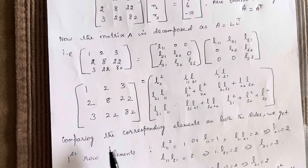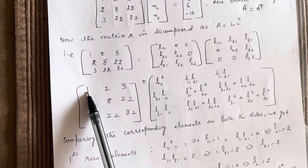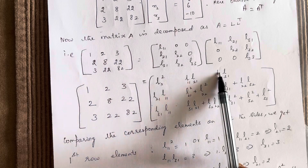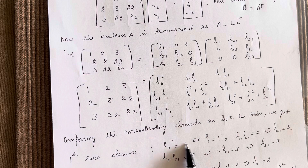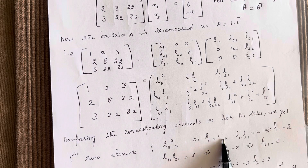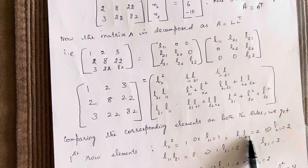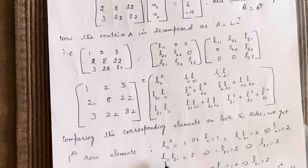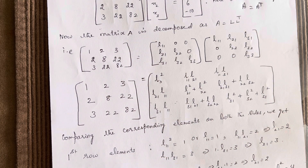Checking the first row elements: L11 squared equals 1, so L11 equals 1. L11·L21 equals 2, and substituting L11 as 1 gives L21 equals 2. Similarly, L11·L31 equals 3, and since L11 is 1, L31 equals 3.